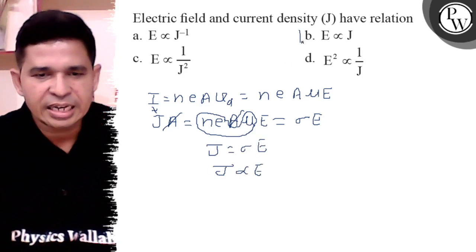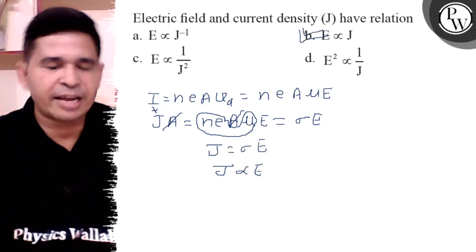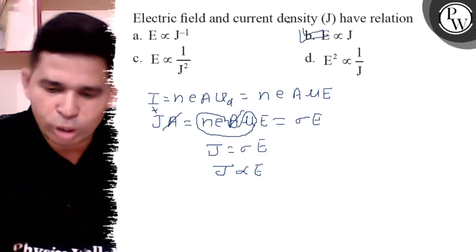So final answer is E is proportional to J. B is the option. Thank you, all the best.